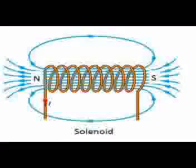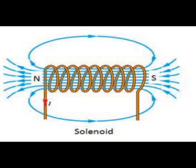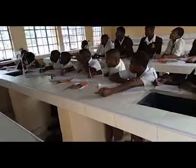To conclude, a solenoid has a north pole and a south pole. The magnetic field lines move from the north pole to the south pole through the outside of the solenoid. The magnetic field is stronger in the middle and at the ends, and weaker on the outside.